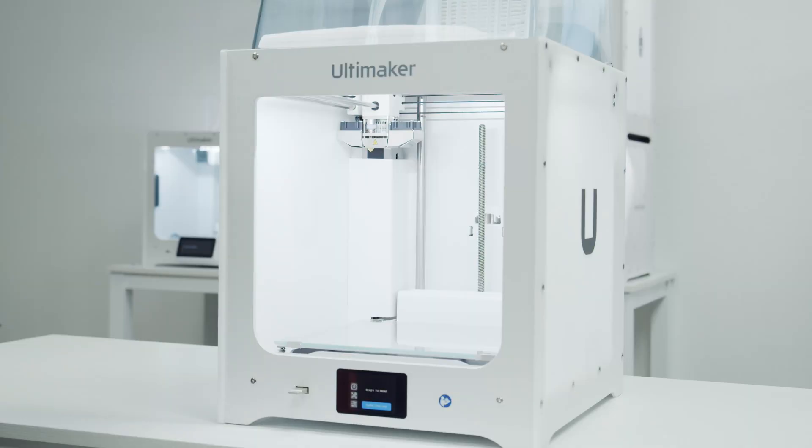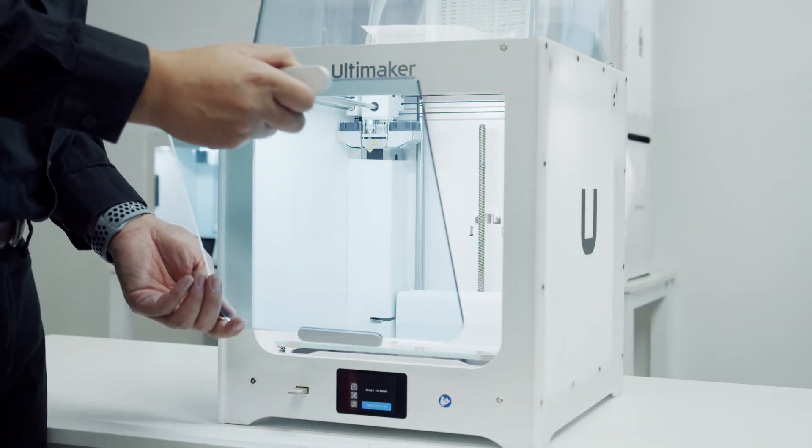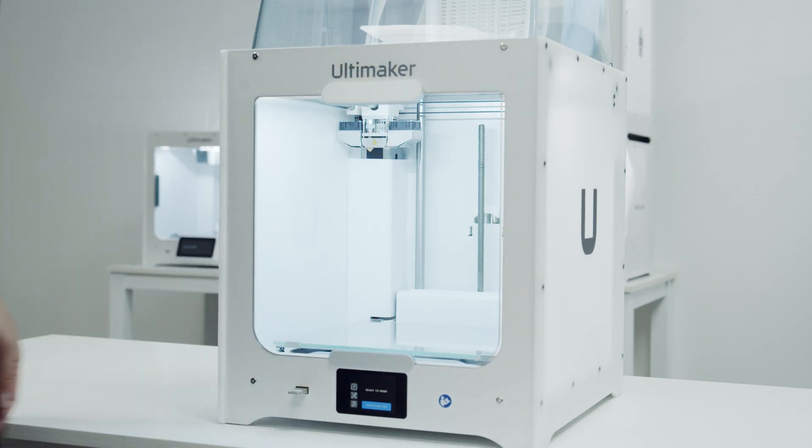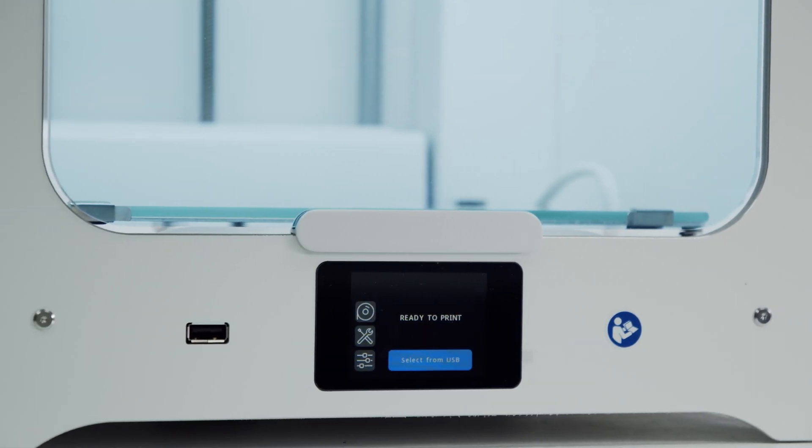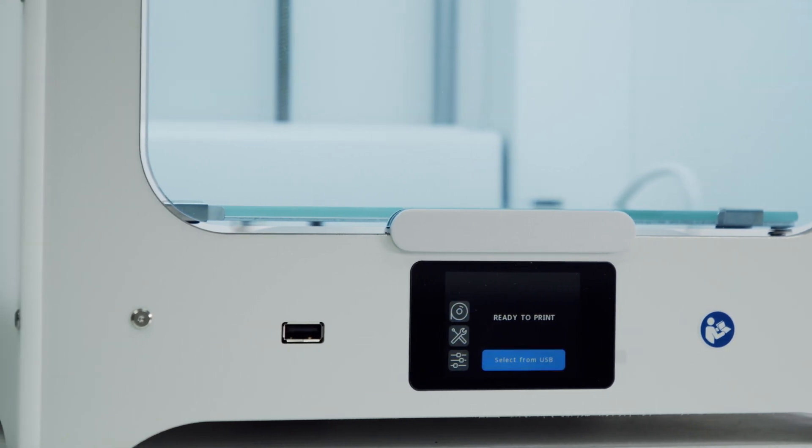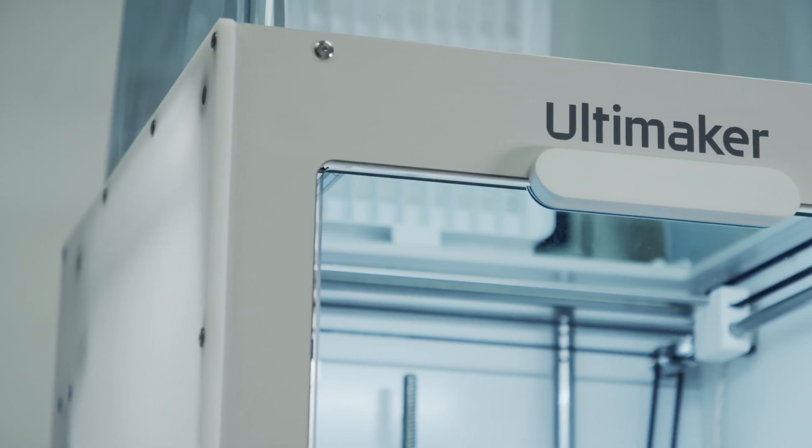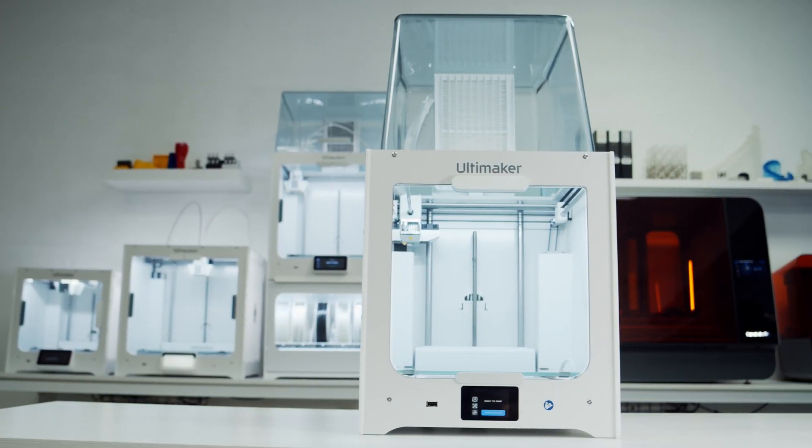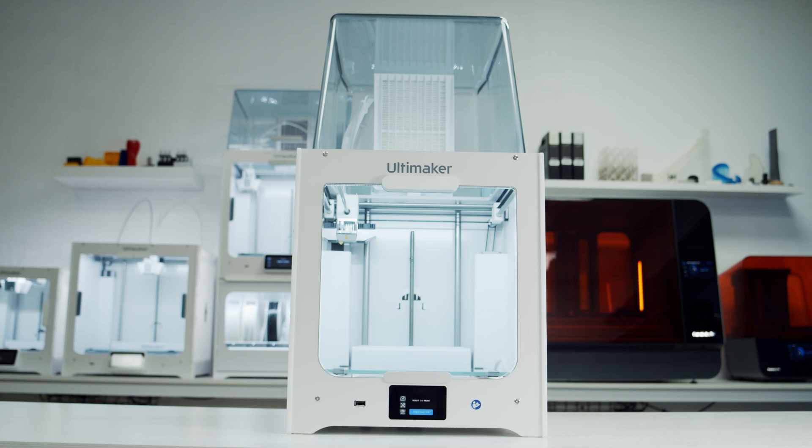Also included with the Air Manager is the door for the front of the printer. This makes your printer fully enclosed. There is a seated hinge on the bottom, and behind the handle, there is a magnet which holds the door on. We now have a completely set up, fully enclosed, Ultimaker 2 Plus Connect.